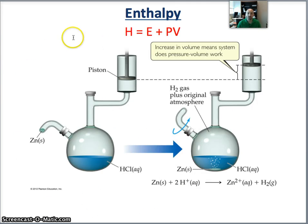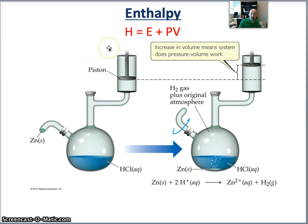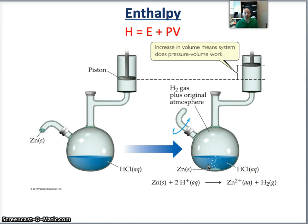To really understand what we're looking at, if we take zinc metal and we're reacting that with hydrochloric acid — remembering back to chapter 4, that means we produce hydrogen gas. Now if we assume that the pressure in the system is the same as the atmospheric pressure, this means that the piston is going to rise because you're having hydrogen gas being produced. The system is doing work on the surroundings by pushing against the atmospheric pressure in order to raise the piston. The work involved in the expansion or compression of a gas is called pressure-volume work.